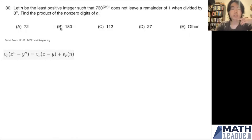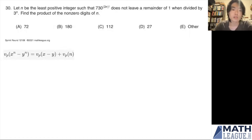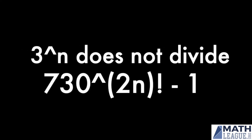We're going over problem 1-10-8, sprint number 30. This is a number theory problem that involves a theorem called LTE, or Lifting the Exponent. This theorem describes the number of occurrences of a certain prime factor p in the difference of two powers x^n and y^n. The problem: let n be the least positive integer such that 730^(2^n factorial) does not leave a remainder of 1 when divided by 3^n — meaning 3^n does not divide 730^(2n!) - 1.